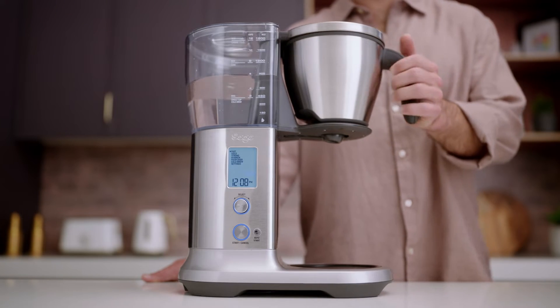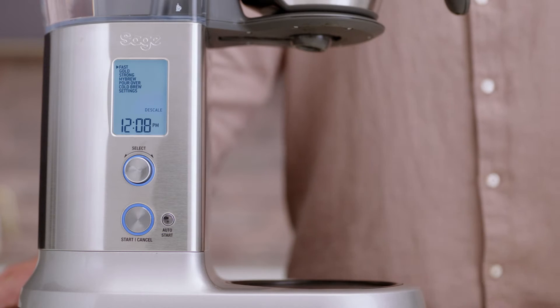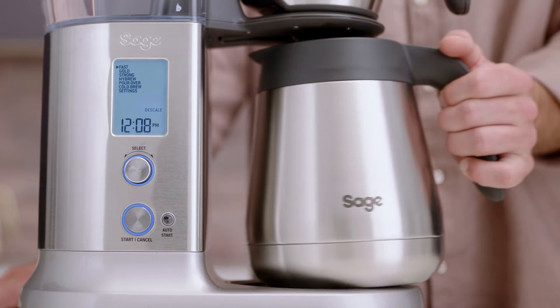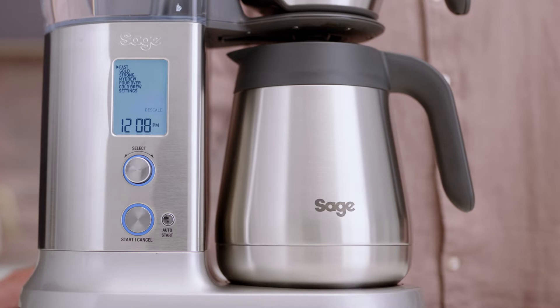Then place the basket and carafe into place under the drip stop outlet. Make sure the carafe is empty and the lid is securely locked.